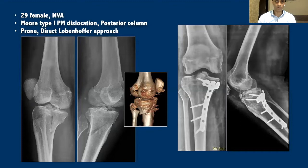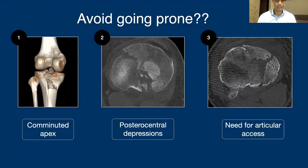Looking at the patient from the previous slide, this patient underwent fracture fixation through a prone posterolateral approach because the fracture pattern was amenable to that. We fixed this fracture using a buttress plate from the posterior aspect. You can see the reduction is anatomical and she went on to heal well.